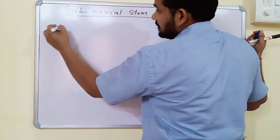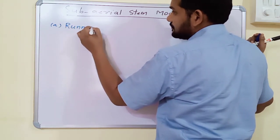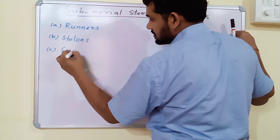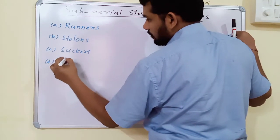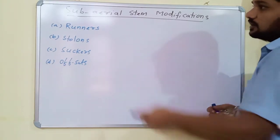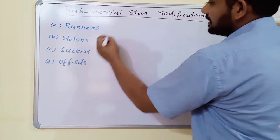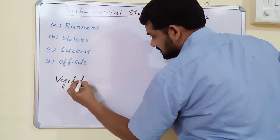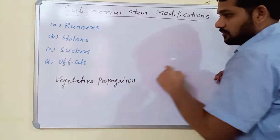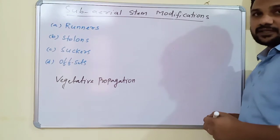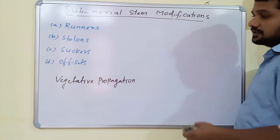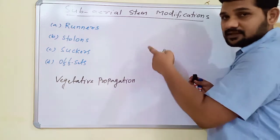Sub-aerial stem modifications are of four types. All these sub-aerial stem modifications take part in vegetative propagation. Vegetative propagation means the vegetative organs of the plant body are directly involved in the formation of new plants. This propagation is called vegetative propagation. Now we will discuss all the sub-aerial stem modifications one by one.